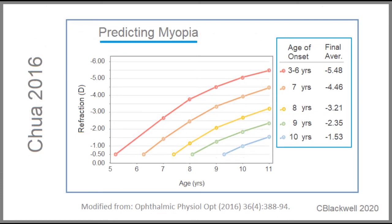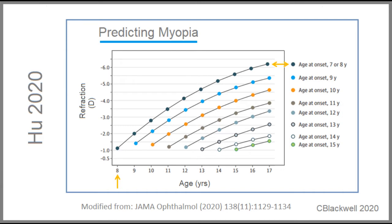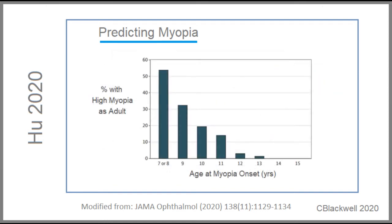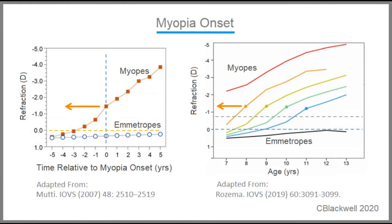The progression of myopia may be easier to see in this graph from Chua, using the same strategy that the best predictor of degree of myopia development is what age it starts. If you want to keep myopia from ending up over minus three diopters, one would consider treatment if onset happens before age eight. This is the same kind of natural history data from Hu in 2020. It is notable that if myopia started at age eight, the average outcome is over minus six diopters. Put another way, this is the percent chance of developing high myopia based on age of onset. We also recall the divergence into myopia began several years before crossing the myopia threshold.